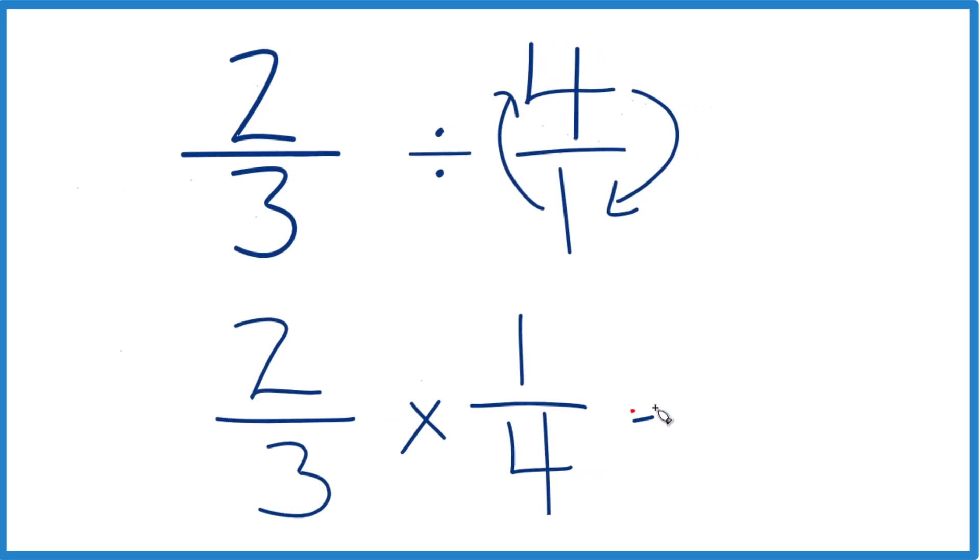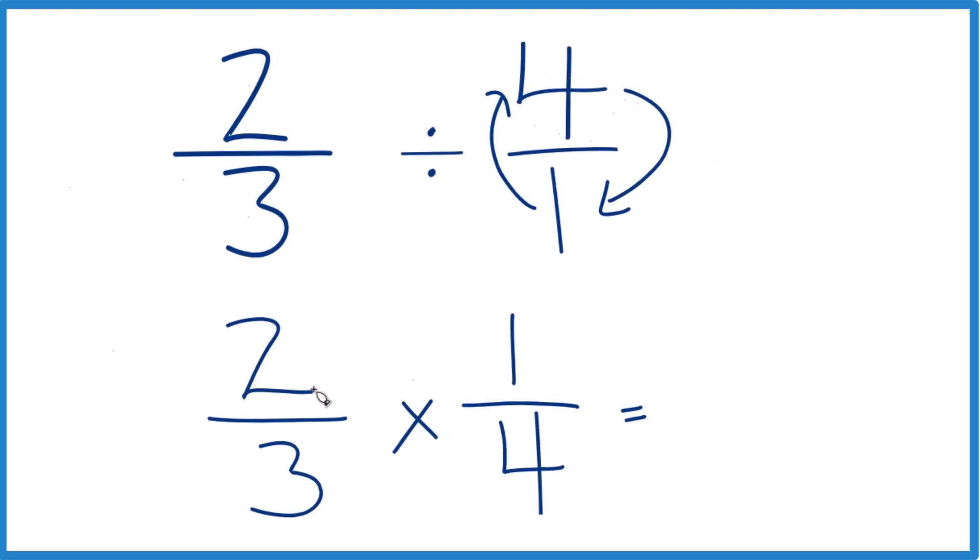Now it's pretty easy, because with fractions, multiply the numerators. Two times one, that's two. And then the denominators. Three times four, that's twelve.